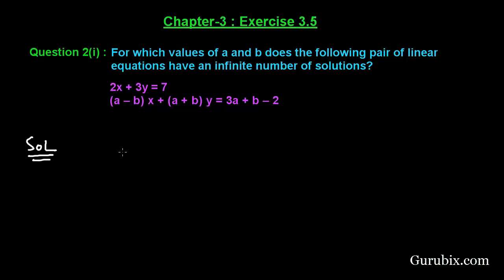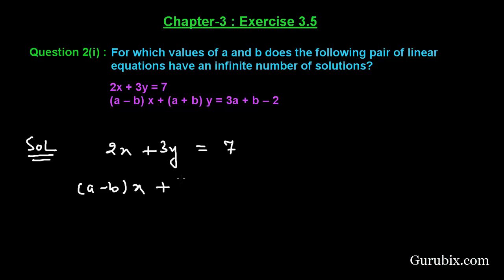First of all, we shall write the given pair of equations. That is: 2x plus 3y equals 7, and (A minus B)x plus (A plus B)y equals 3A plus B minus 2.